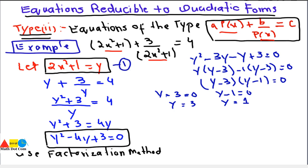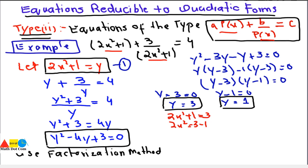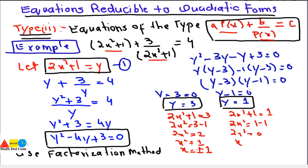We substitute these two values back into equation 1. For y = 3: 2x² + 1 = 3, so 2x² = 2, x² = 1, and taking the square root on both sides gives x = ±1. For y = 1: 2x² + 1 = 1, so 2x² = 0, x² = 0, giving x = 0.